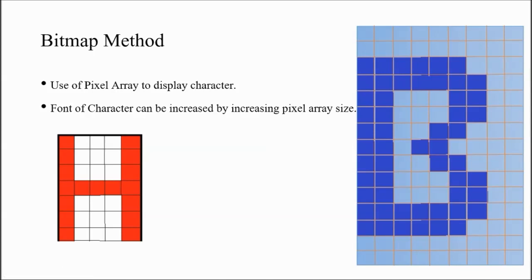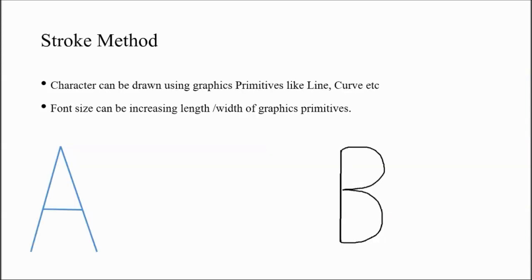This is the method called bitmap method where we use pixel arrays. The second method is stroke method. In stroke method, characters can be drawn with the help of already available graphics primitives like line, curve, circle, etc.